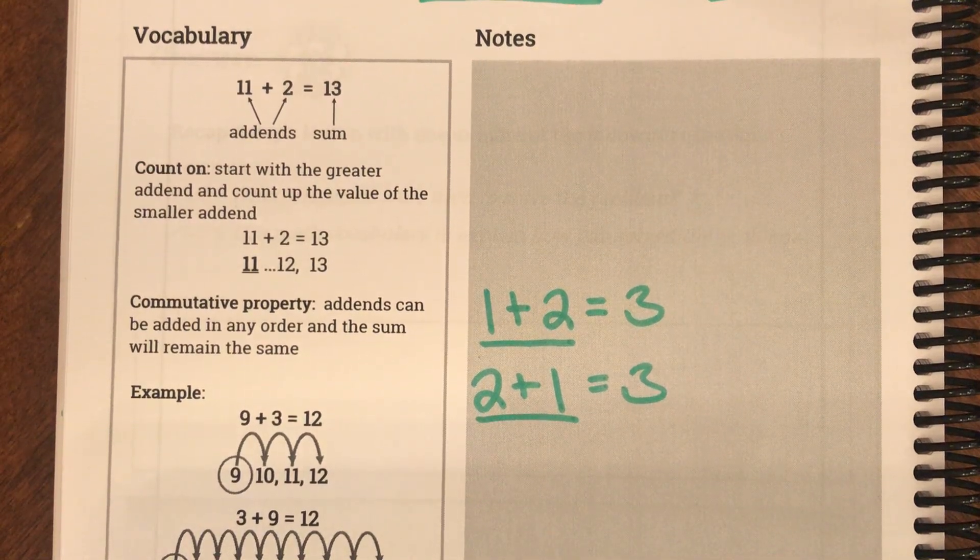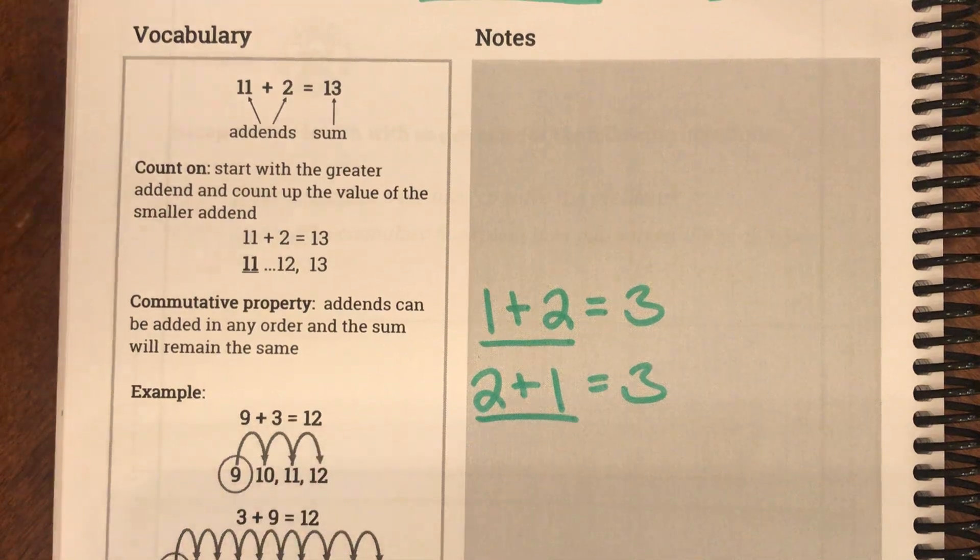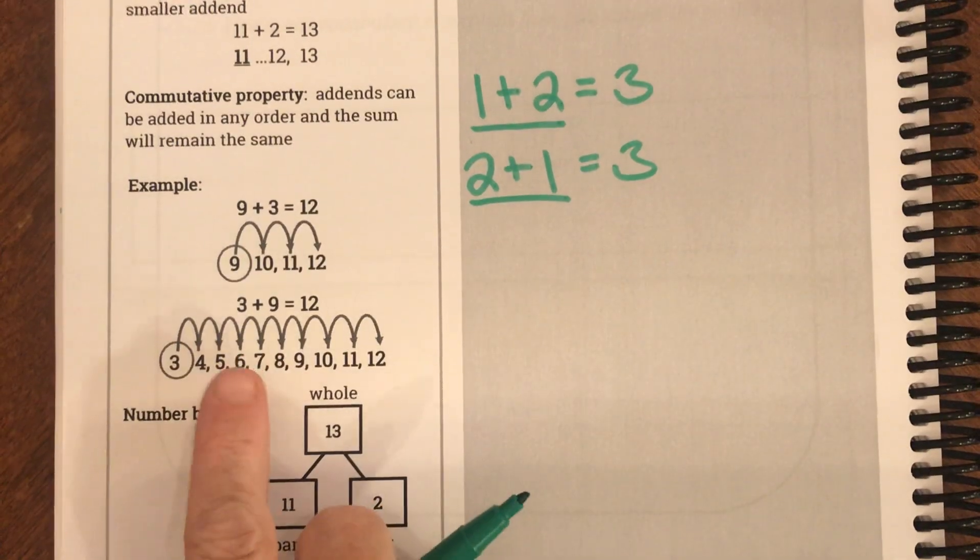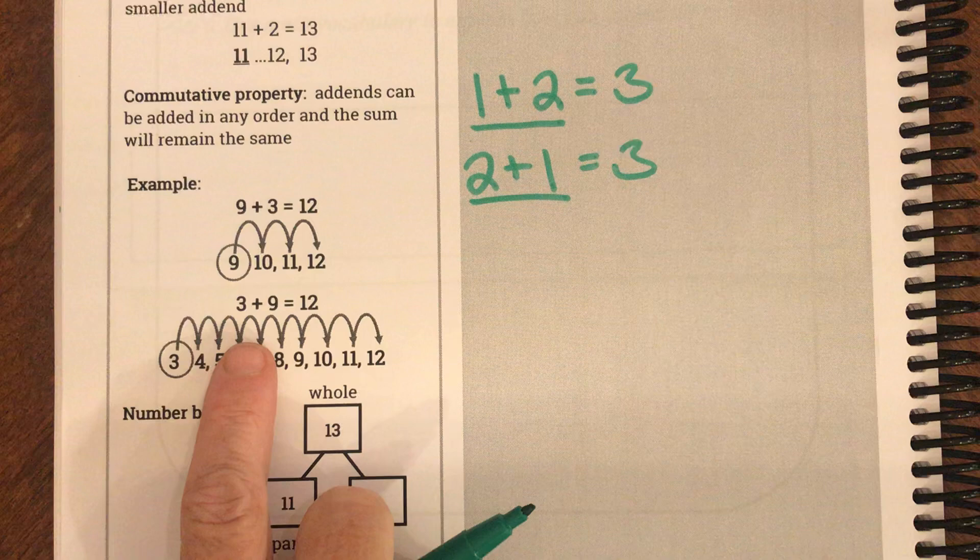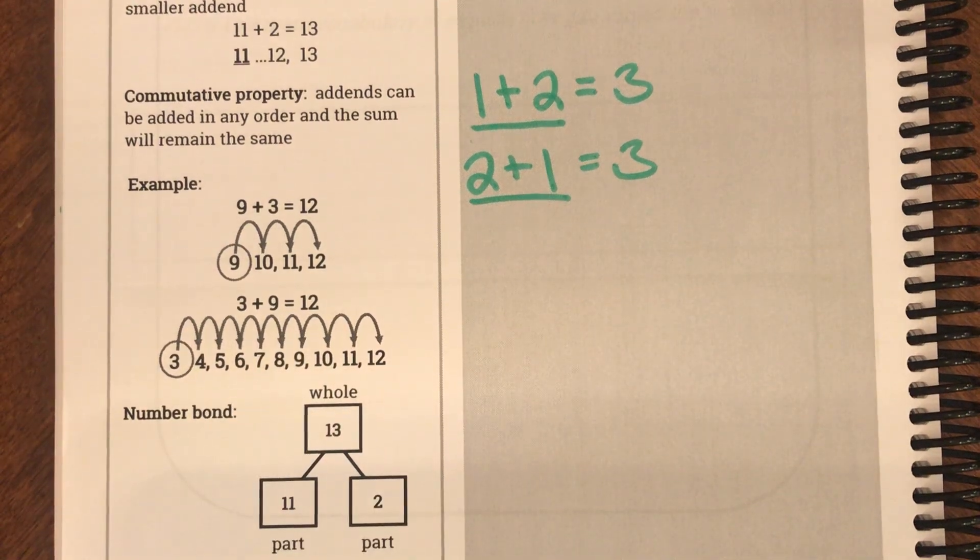That's what the commutative property says is you can change the order of your addends. And their example is 9 plus 3 equals 12 and then they changed the order of the addends and said 3 plus 9 equals 12.